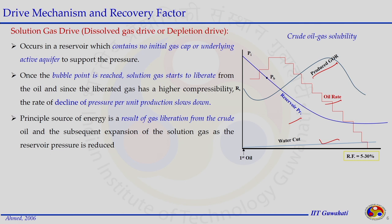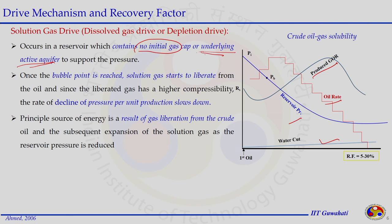The second drive mechanism is the solution gas drive, also called dissolved gas drive or depletion drive. It occurs in a reservoir which contains no initial gas cap and no underlying active aquifer to support pressure. The difference from the previous mechanism is that pressure declines below the bubble point. When this happens, gas evolves out from the oil — the dissolved gas is liberated — and that actually supports the formation in terms of pressure.